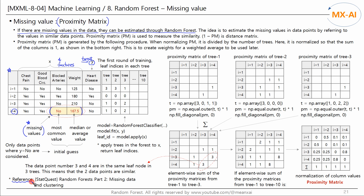The basic idea is to estimate the missing values of a data point by referencing data points that are similar to that data point. Data point 4 is very similar to data point 3 — the two features are exactly the same and the target class is the same. So these missing values are likely to be similar to those values. Data points 4 and 1 are not similar, so the missing values will not be similar to those values. This is the basic idea of estimating missing values.